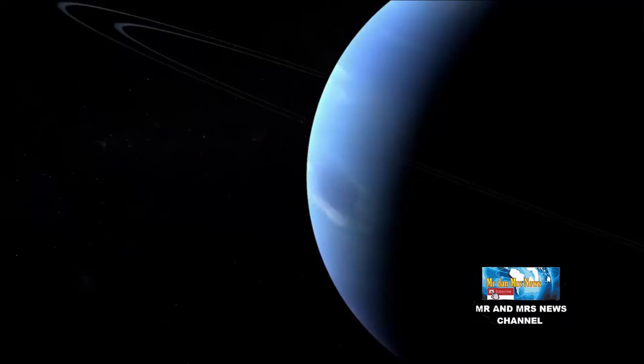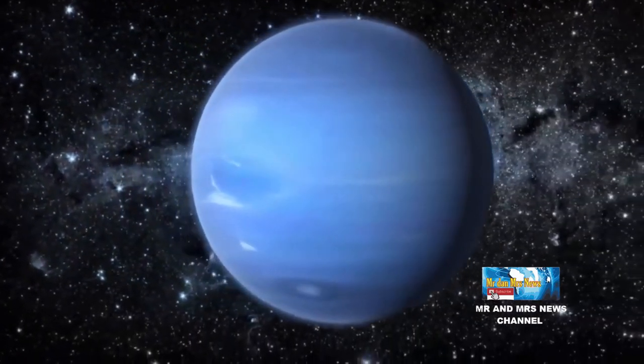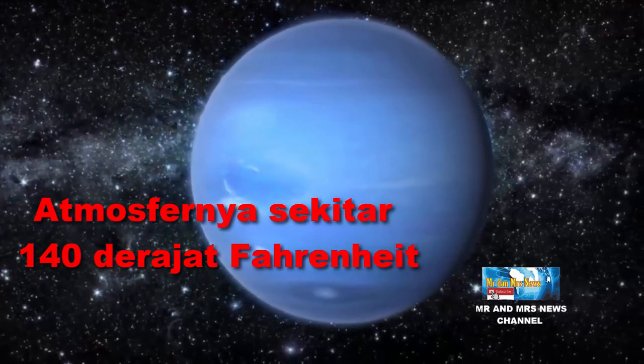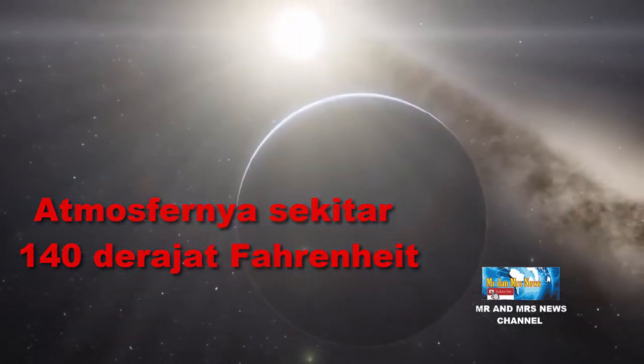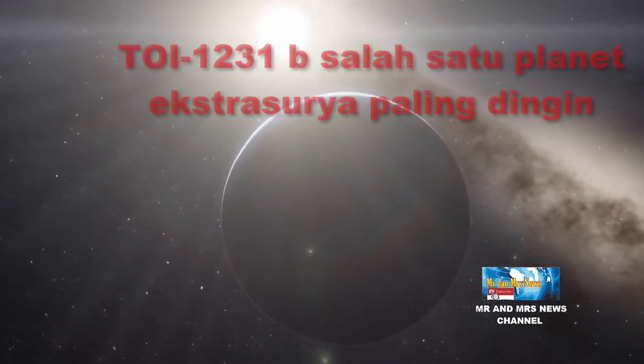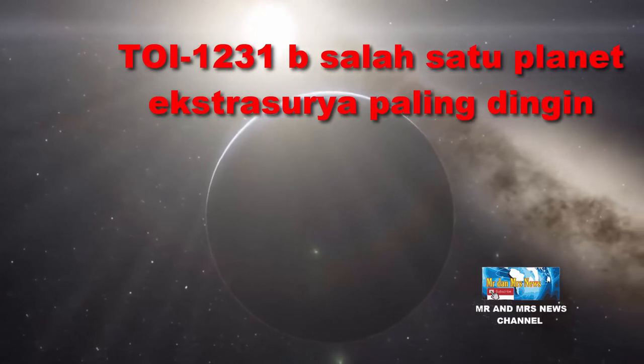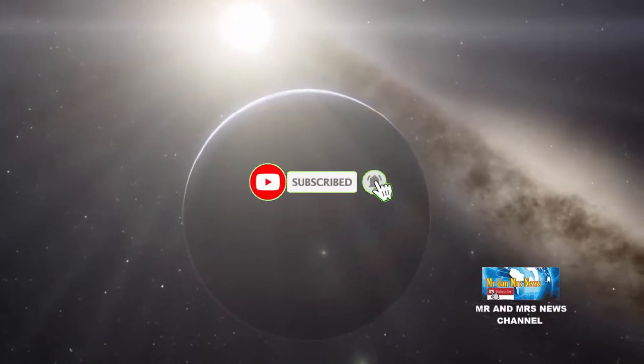Hal ini disebabkan karena KTM merah planet itu kurang kuat. Atmosfernya sekitar 140 derajat Fahrenheit menjadi TOI-1231B salah satu planet ekstrasurya paling dingin untuk penelitian atmosfer yang pernah ditemukan.